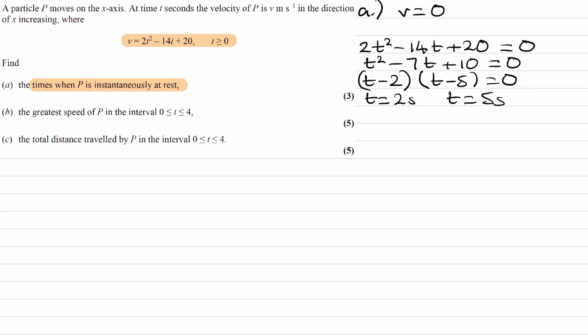For part B, we are trying to find the greatest speed in the interval of 0 to 4 seconds. So to do this, we want to sketch the graph, sketch our velocity time graph. Our velocity time graph is a quadratic. It's also a positive quadratic, as we can see from the positive 2t². And we have the two roots, t = 2, t = 5. So our graph might look something like this, where this is 2, this is 5.